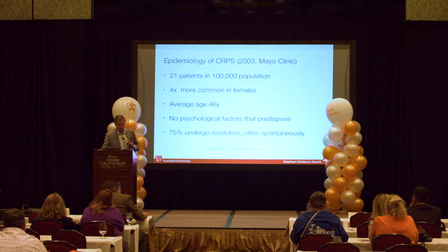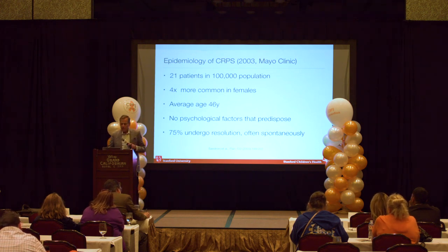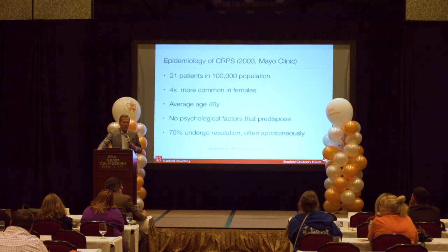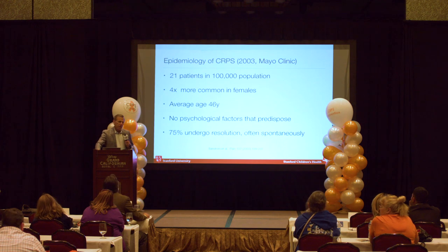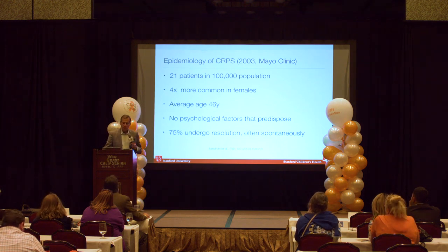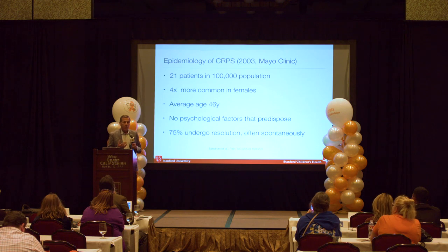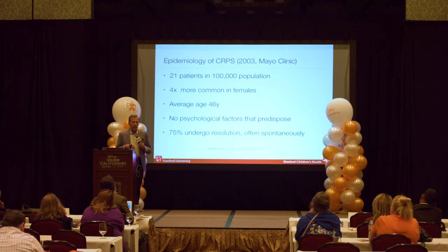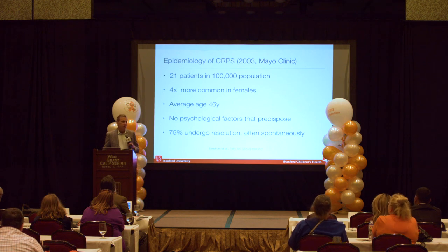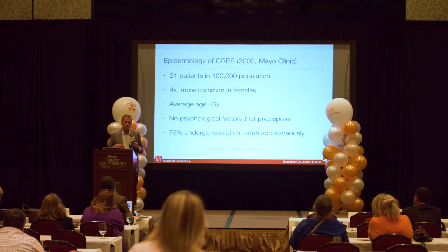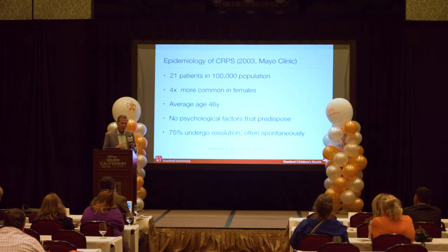In 2003, the Mayo Clinic published one of the best epidemiologic studies, finding about 21 patients per 100,000 population suffer from CRPS. It's about four times more common in females than males. In our pediatric population, it's about seven or eight times more common in girls than boys. The average age was 46, and the study found no underlying psychological abnormalities associated with CRPS — it doesn't occur with higher frequency in individuals with a psychiatric diagnosis like depression, schizophrenia, or OCD. Surprisingly, they said the majority resolve spontaneously, which has not been my experience.